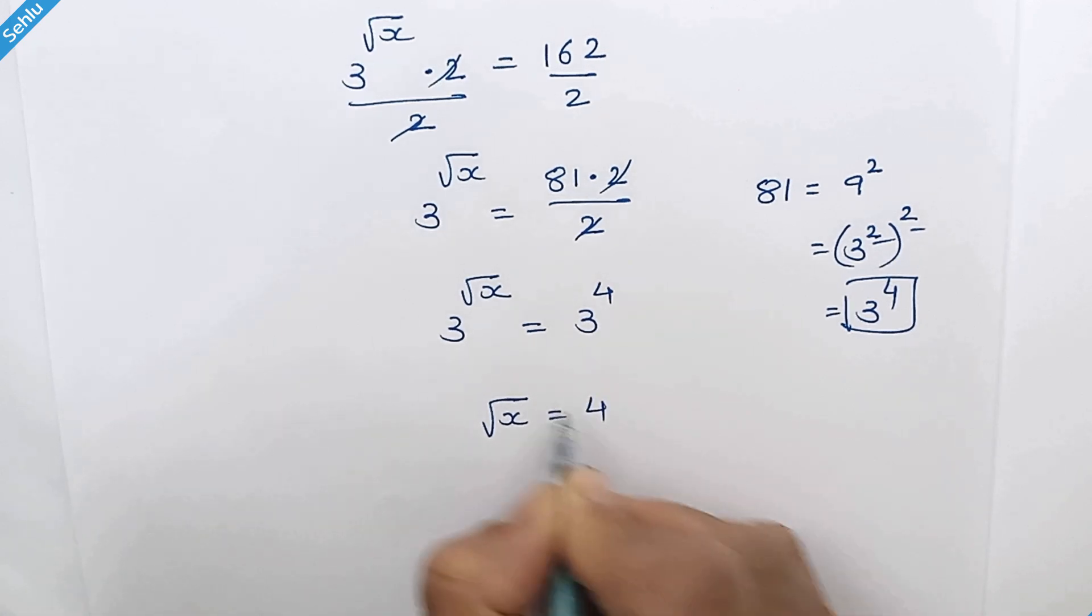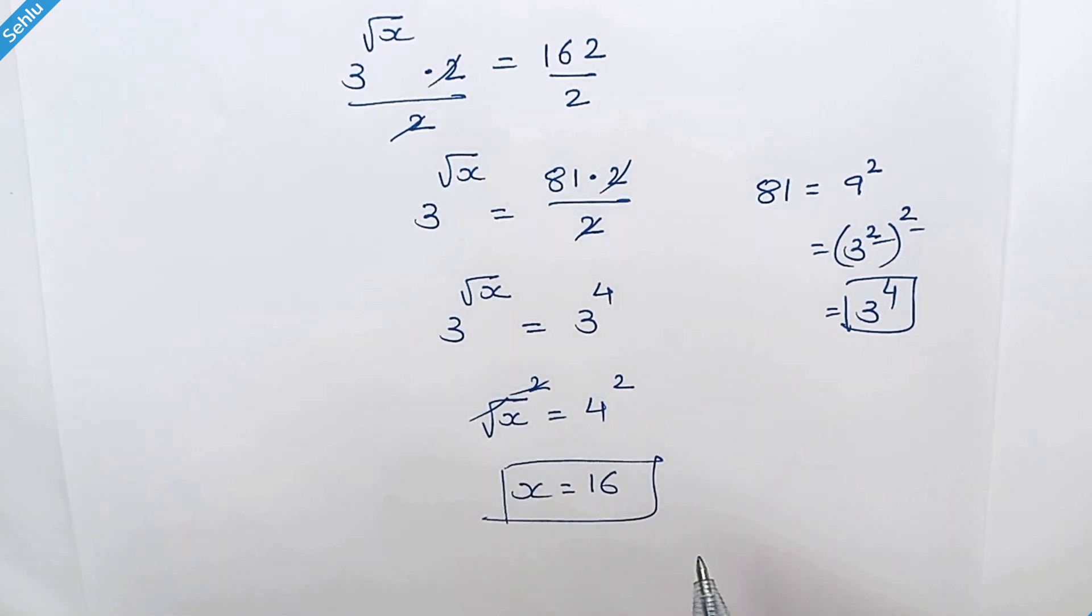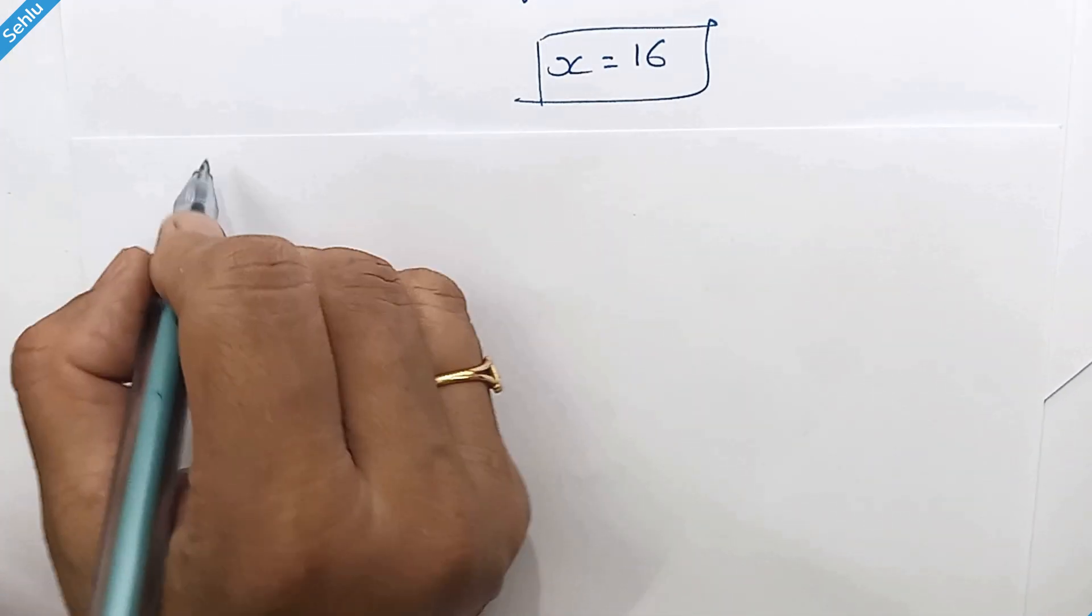is equal to 4. Squaring both sides, the square and square root will be cancelled, so we have x = 16. That's our answer. Now let's quickly verify this answer.